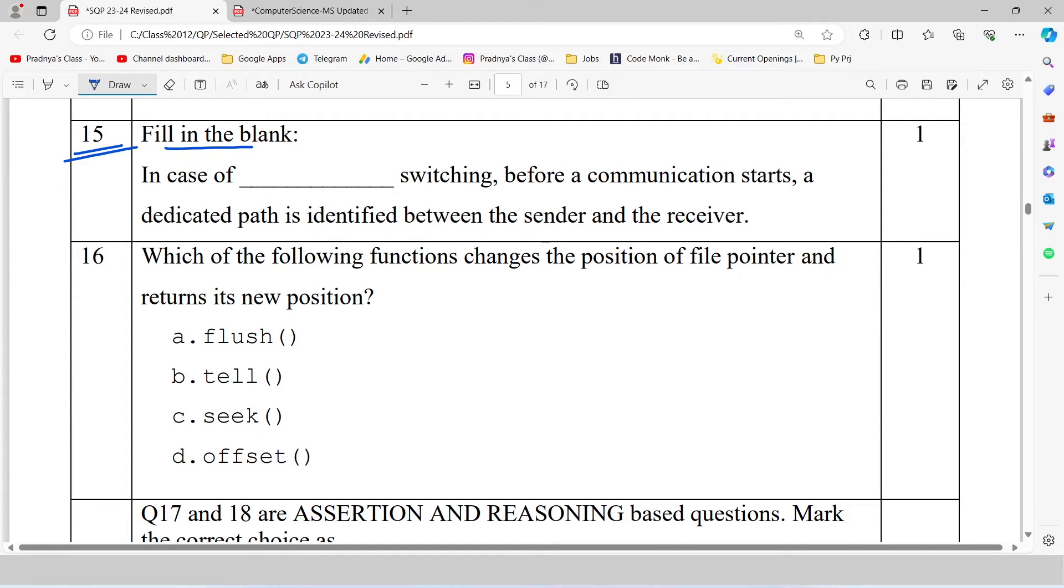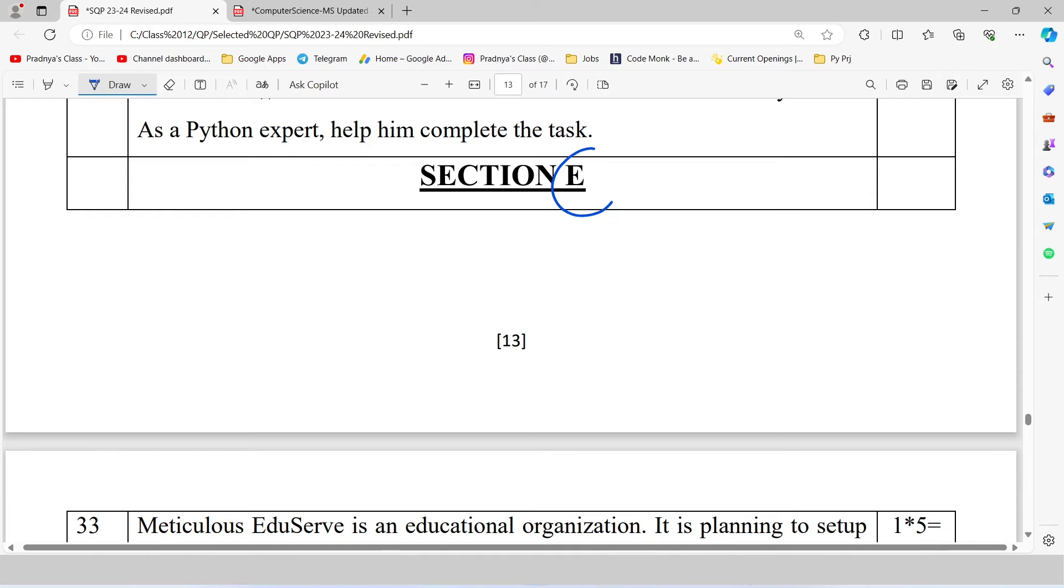Let's check out. It is also in the form of fill in the blank. In case of dash switching, before a communication starts, dedicated path is identified between sender and receiver. There are three types of switching techniques: circuit switching, message switching and packet switching. There will be no direct link between sender and the receiver. So the correct option is circuit switching. The example is telephone line. Proceeding to the section E.